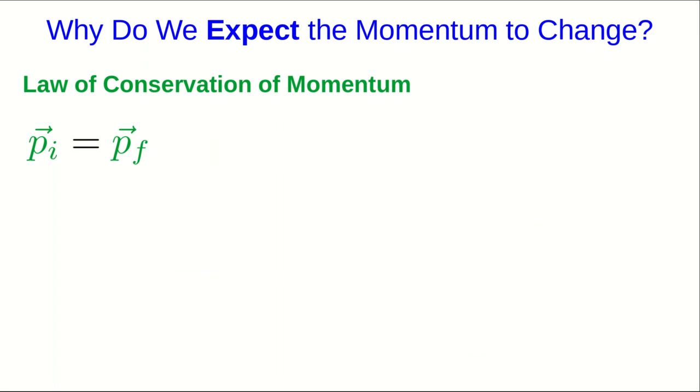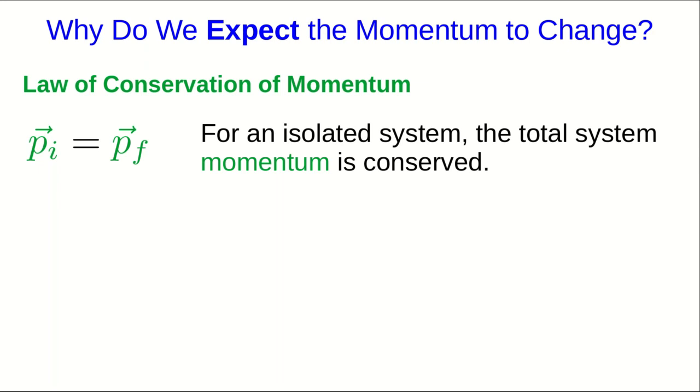This sort of issue that we're running into in this experiment is part of why we often have multiple versions of physical laws. So the law of conservation of momentum, which you could look at this experiment as a test of, is often stated this way. Or for an isolated system, the total system momentum is conserved. But there's really important fine print here. This is only for an isolated system.